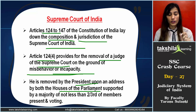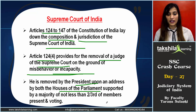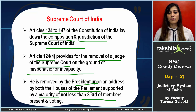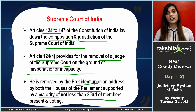The important point here is the majority required. Both the houses must pass the motion by a majority of not less than two-thirds of members present and voting. If many members are present and voting, two-thirds of them must agree. Once that address is approved by both houses, it goes to the President, who then removes the Supreme Court judge. This majority type is important from the exam point of view.